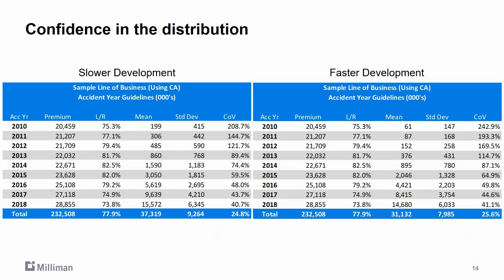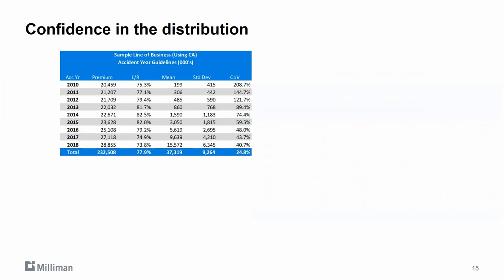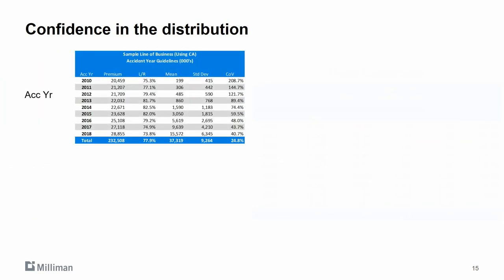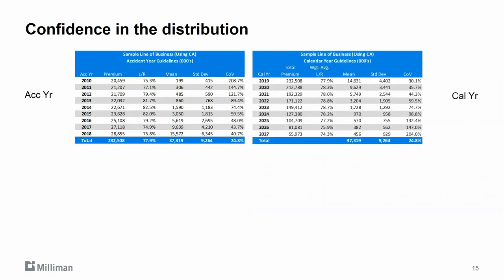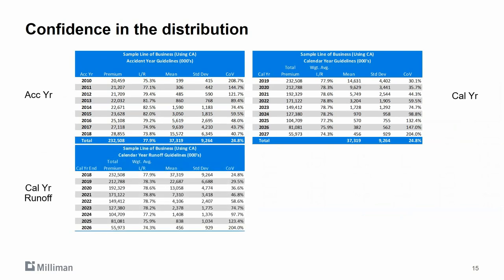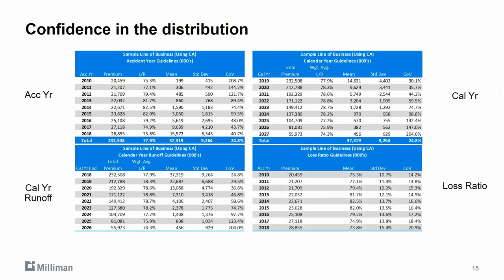The benchmarks can also be tailored to your selected claim development pattern, among other options. In addition to the unpaid claims, the algorithm also includes benchmarks for calendar year cash flows, unpaid claim runoff, and loss ratio distributions. These different outputs can help you benchmark risk margins, pricing risk, and other estimates.